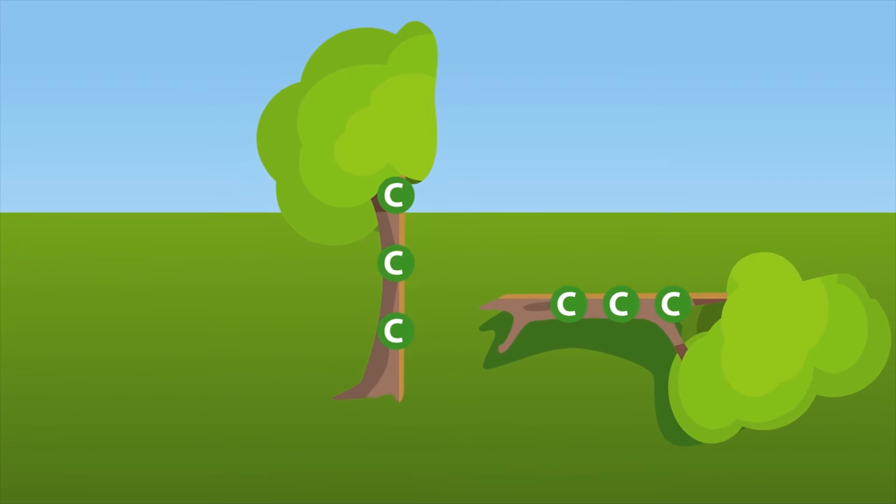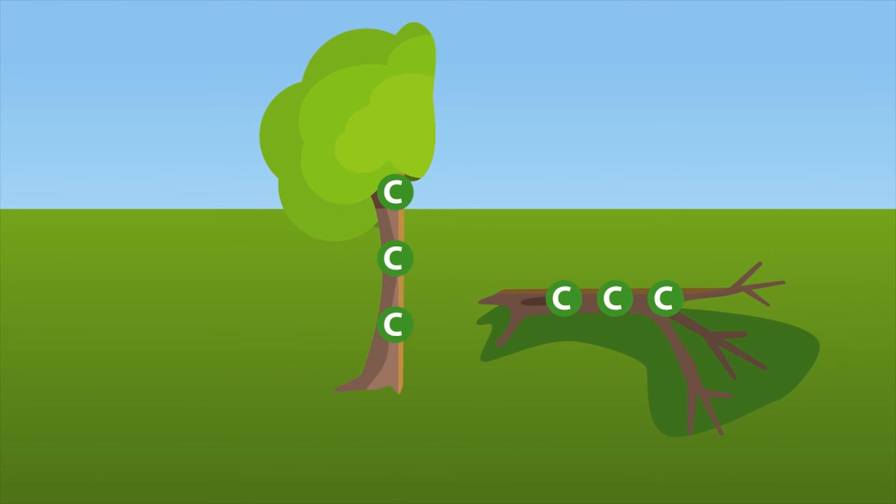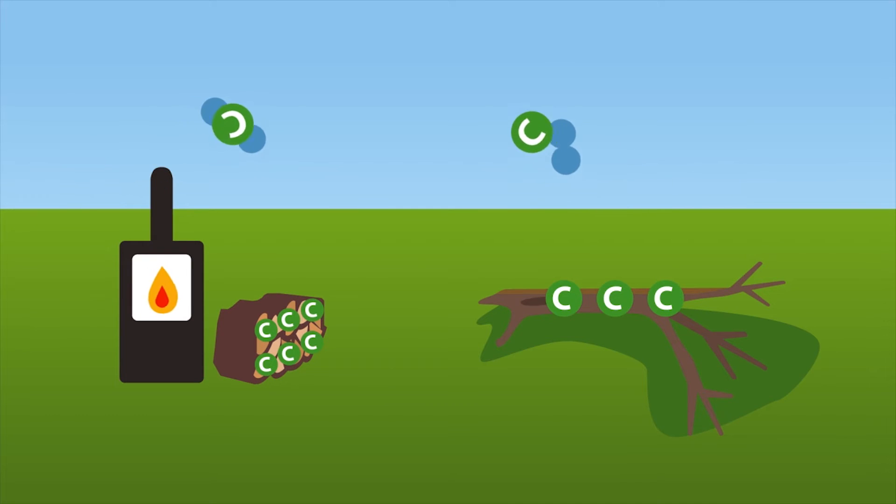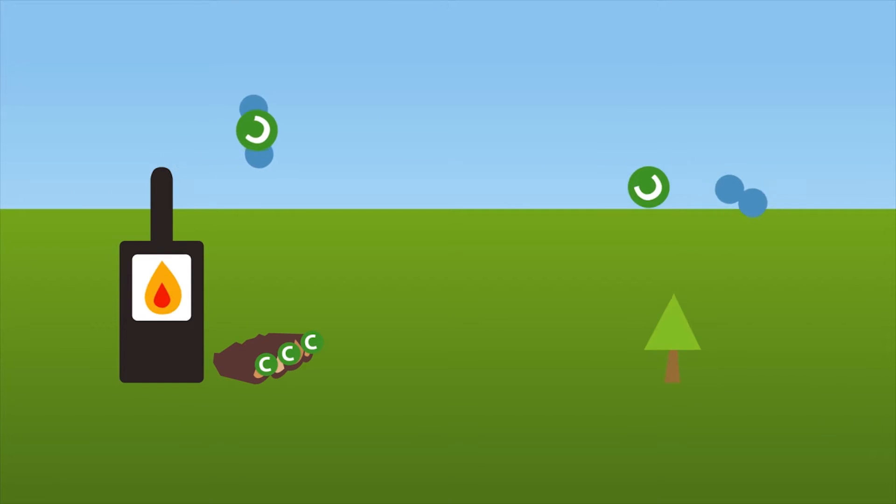Once wood decays in the forest or is used as fuel for heating, the carbon and oxygen stored combine and once again form CO2. Thus, the same amount of CO2 is released as the trees absorbed during their period of growth. The cycle is complete.